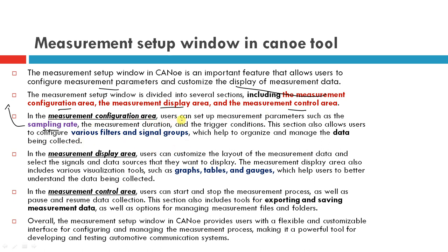In the measurement configuration area, users can set up measurement parameters such as sampling rate, measurement duration, and trigger conditions. This section also allows users to configure various filters and signal groups, which helps to organize and manage the data being collected.